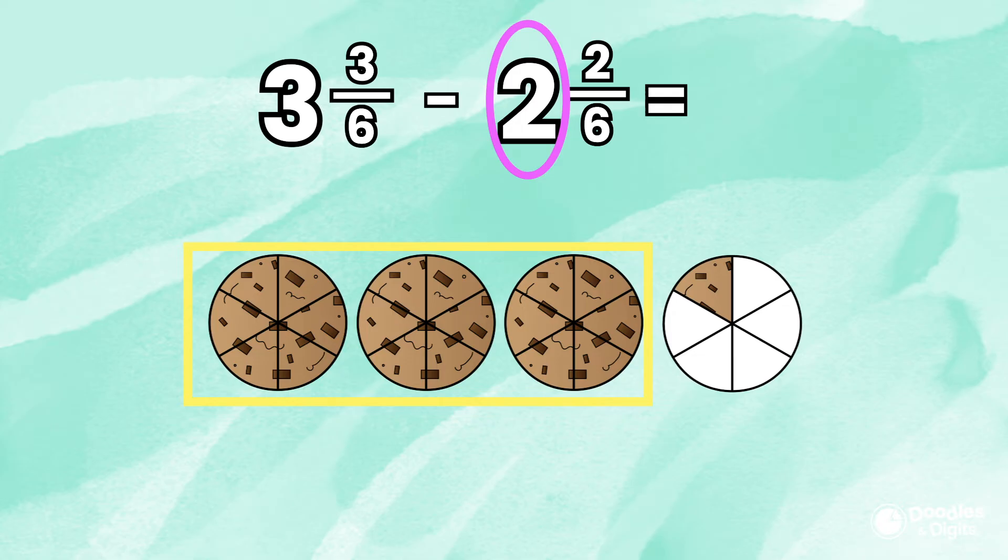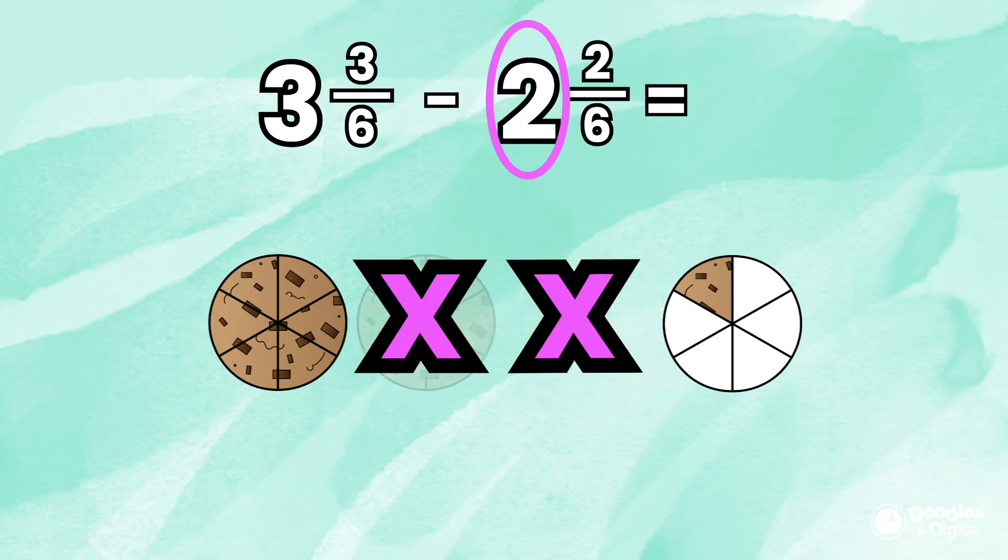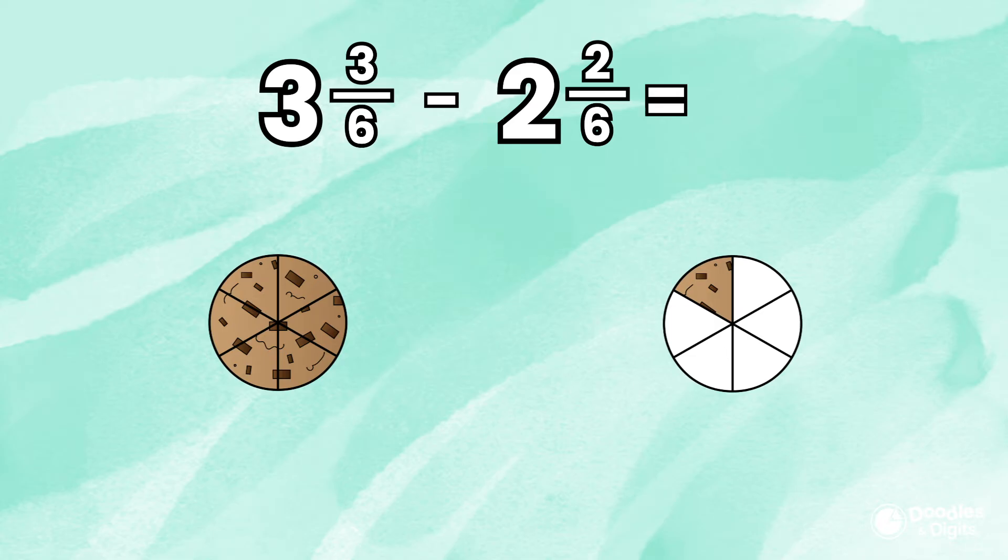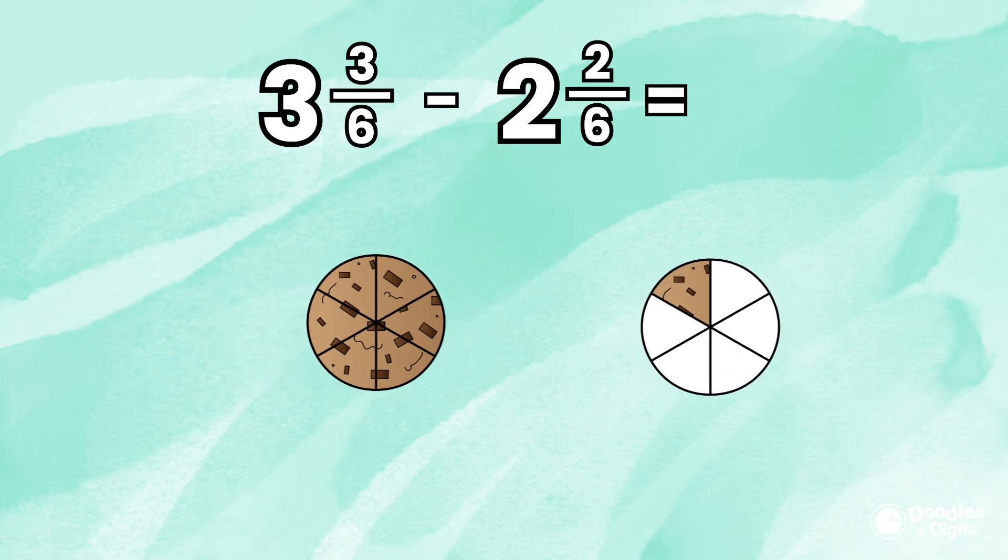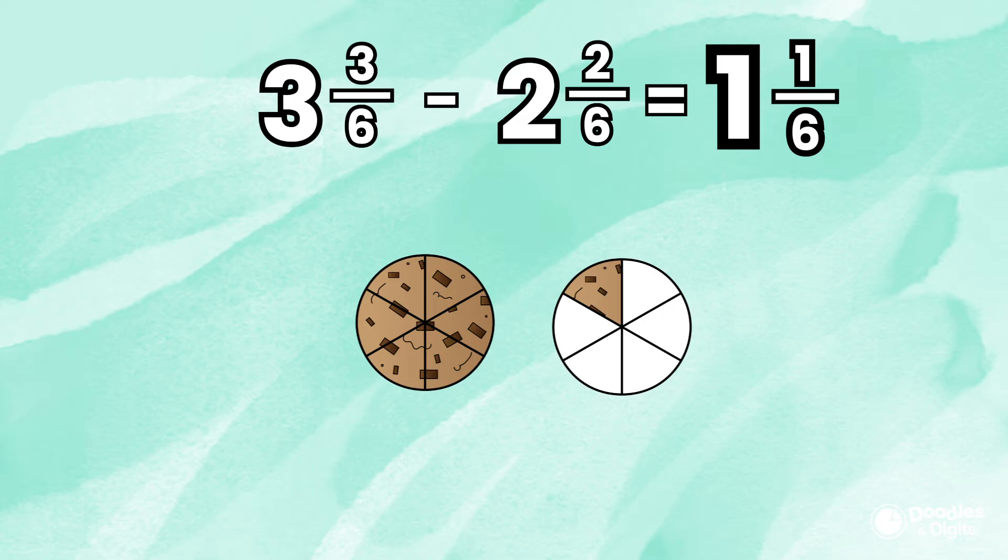Now let's look at the whole numbers. We have three cookies and we need to subtract two cookies. What's left over? Our answer is going to be one and one-sixth.